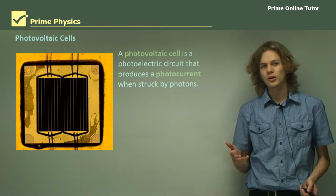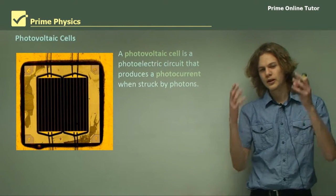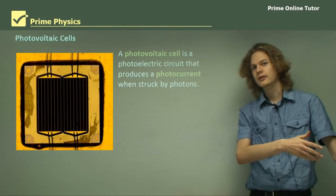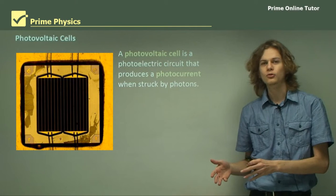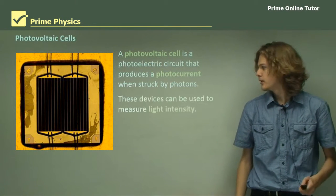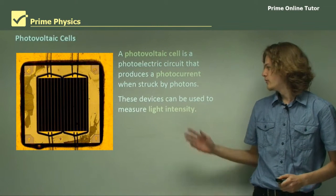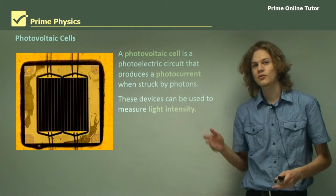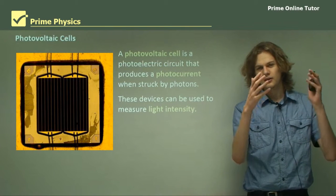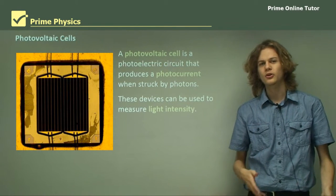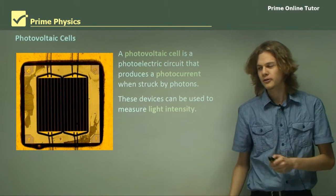We've learned about this in the photoelectric effect. We get photons creating movement in electrons, which causes a current. These devices can be used to measure light intensity because, obviously, light of greater intensity will produce a greater photocurrent.